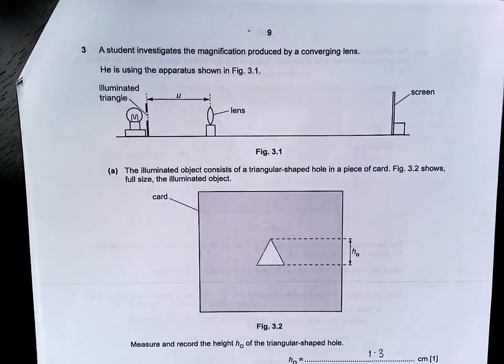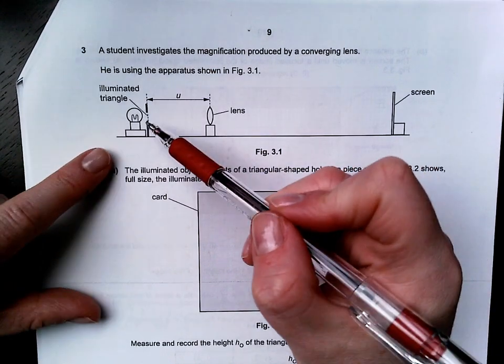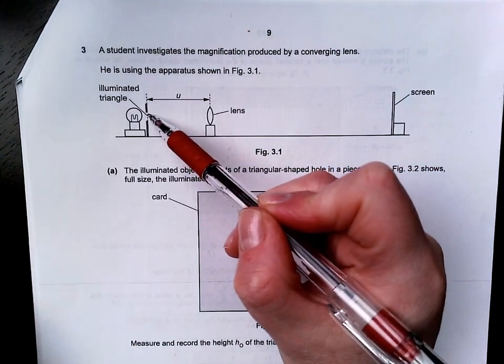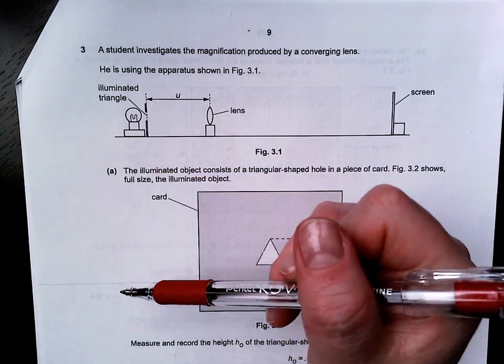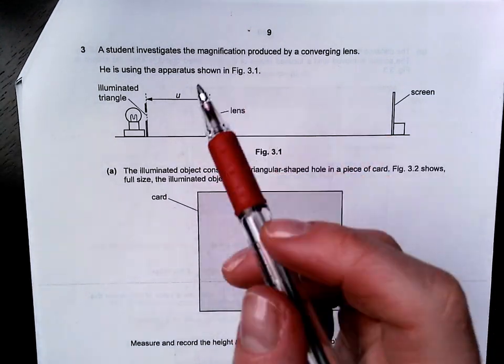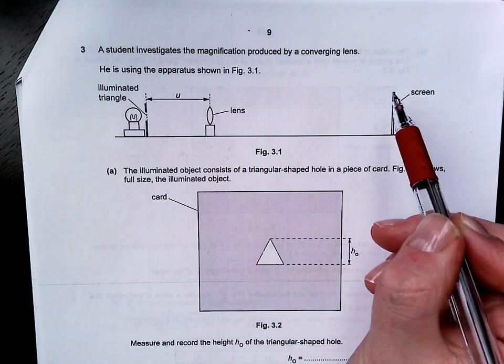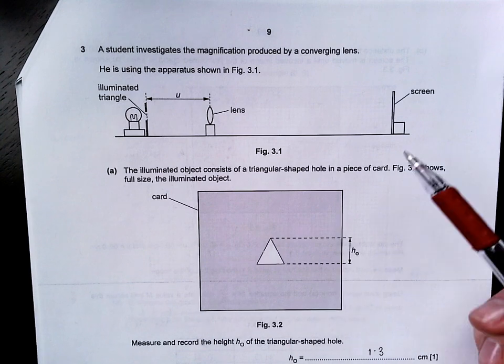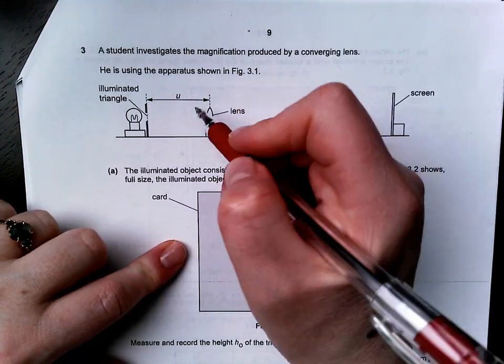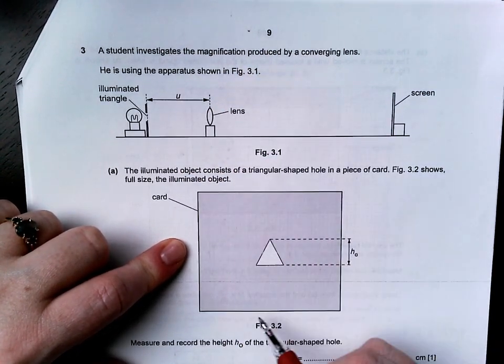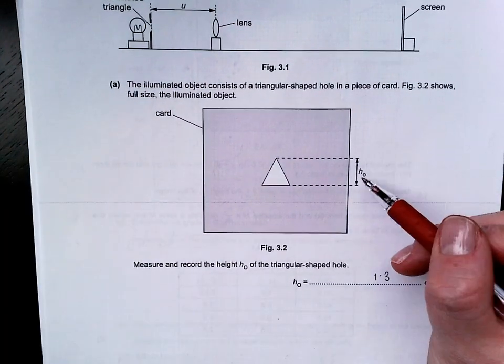In question three, a student investigates the magnification produced by a converging lens. He uses the apparatus shown. We have a hole cut out of a piece of card in the shape of a triangle. Light is coming through the triangle from this light bulb. Some distance away, we then had a lens and then some further distance away, we had a screen. We use these in the classroom.